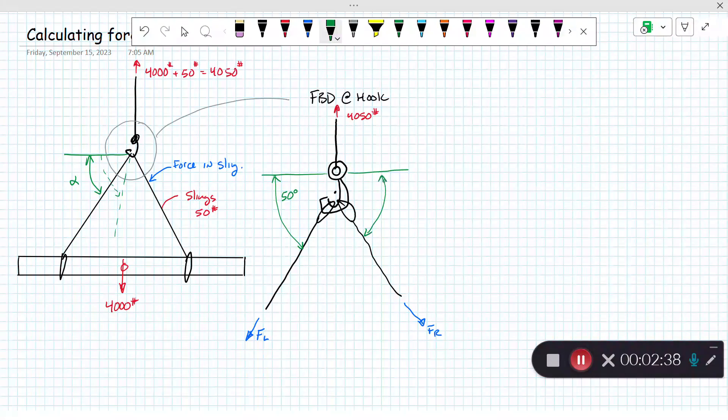If it's symmetrical, it'll be the same on both sides. Rigging is typically done symmetrically if it's a uniform load. For this simple case we'll do equal angles of 50 degrees. Now we're going to apply our equations of equilibrium.